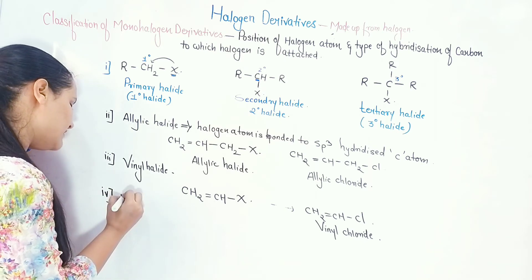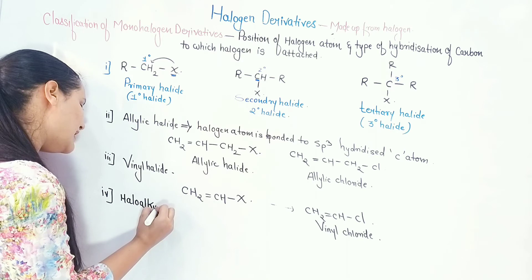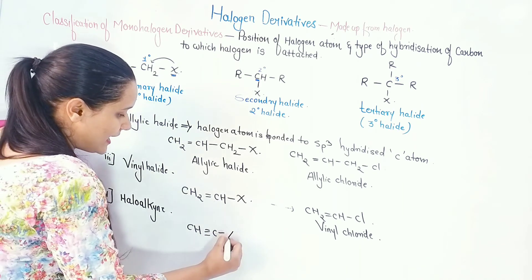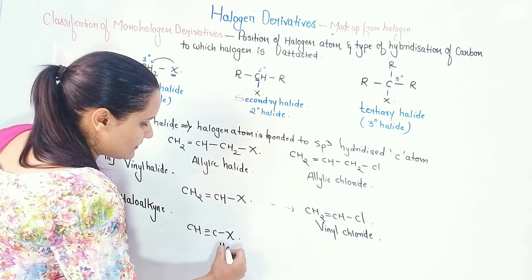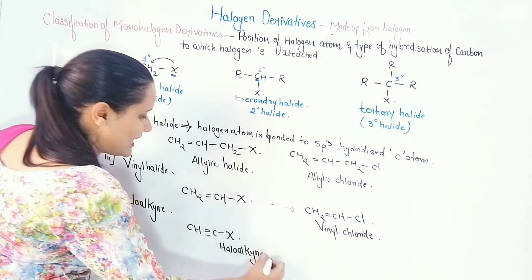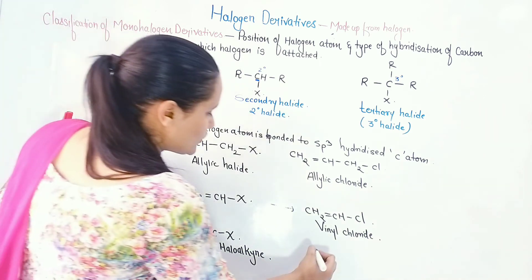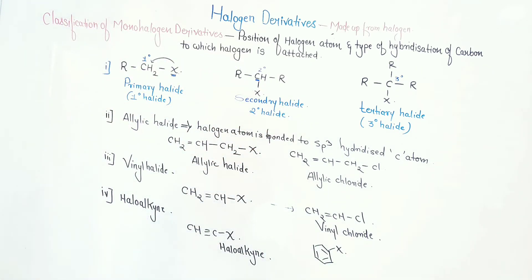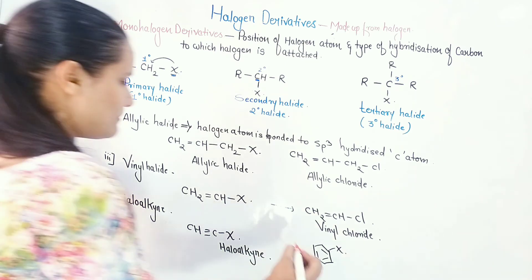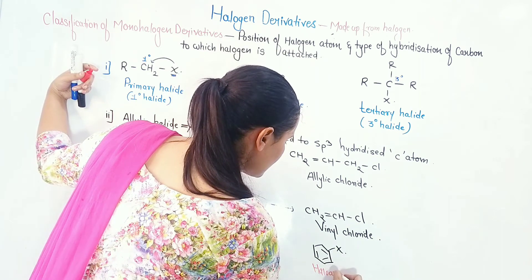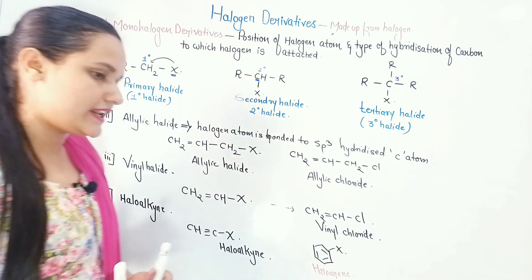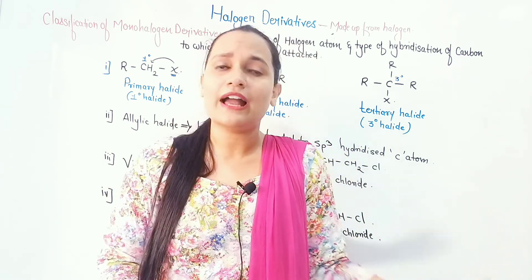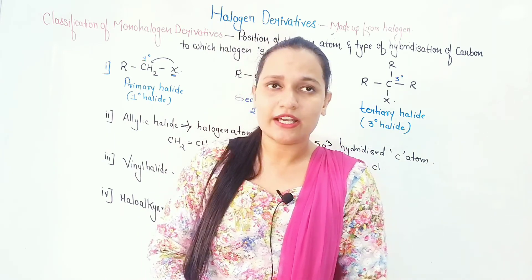The next further classification includes haloalkyne: if CH≡CH is an alkyne and a hydrogen is replaced by a halogen, it is a haloalkyne. And if I have an aromatic compound — an aryl group — and I attach a halogen, it is called a haloarene. So to summarize the classification of monohalogen derivatives: primary, secondary, tertiary, allylic, vinyl, haloalkyne, and haloarene — these are all the classifications.